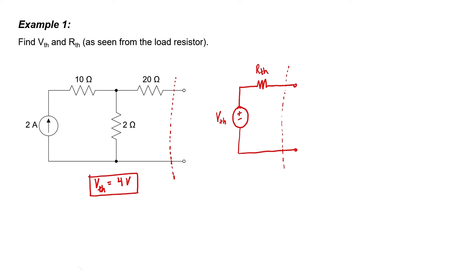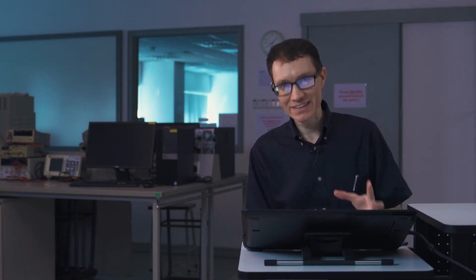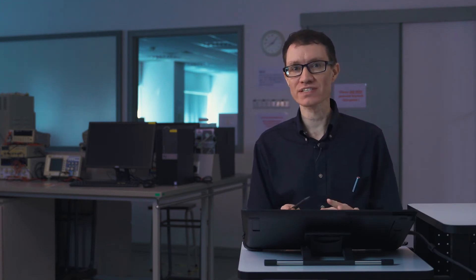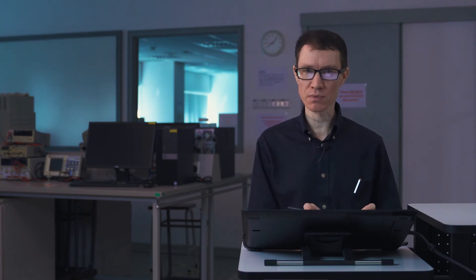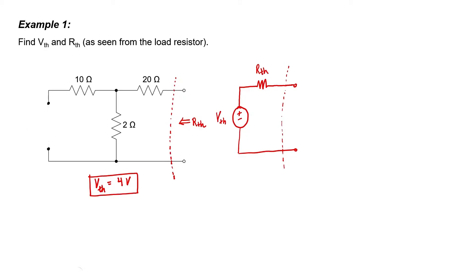To find the Thevenin equivalent resistance, we need to zero out all of the sources and see what the effective resistance is looking back from the terminals. If I zero out the 2 amp current source, I dial it down to 0 amperes. No current flowing corresponds to an open circuit. We now have a 20 ohm resistor in series with a 2 ohm resistor, which is in parallel with an open circuit. 20 plus 2 is 22.